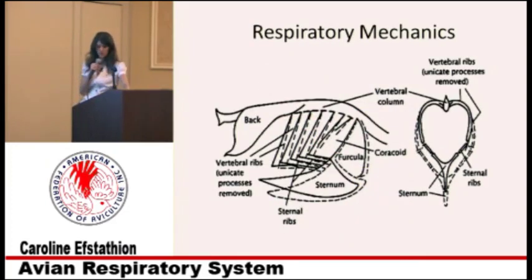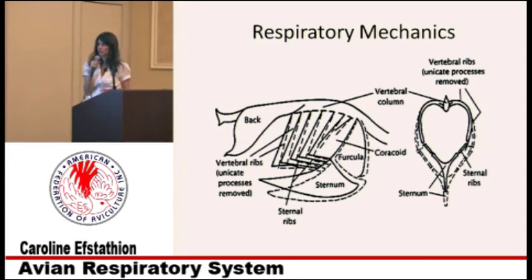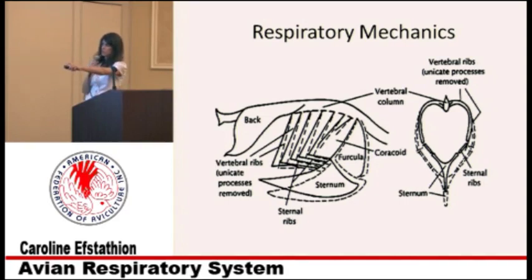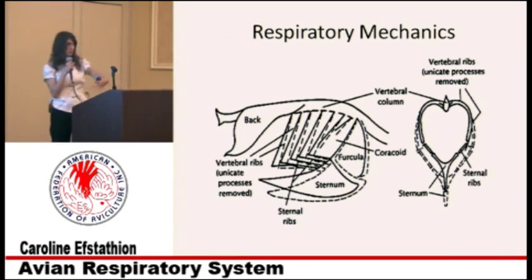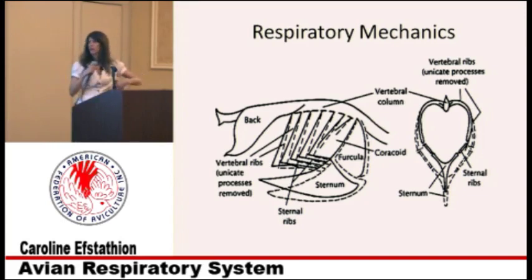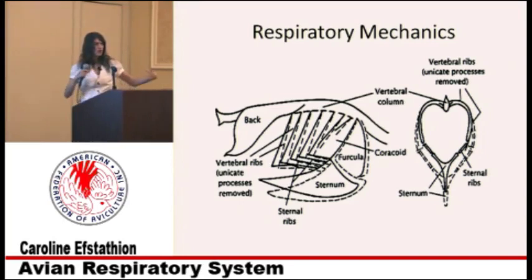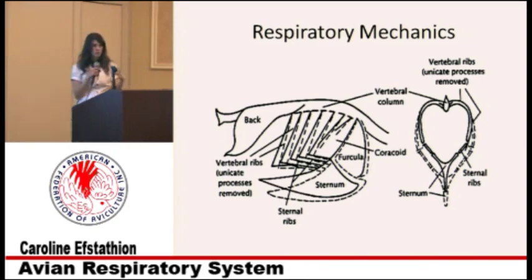The respiratory mechanics are a little different from mammals. Birds don't have a diaphragm. Instead, they use their intercostal muscles, which pull on the sternum, wishbone, and ribs. During inspiration, the sternum is pulled down and out, the ribs are pulled laterally, and the wishbone is pulled out, creating a slight negative pressure that fills the air sacs. Then the muscles contract again, push the air sacs in, and air is expelled.